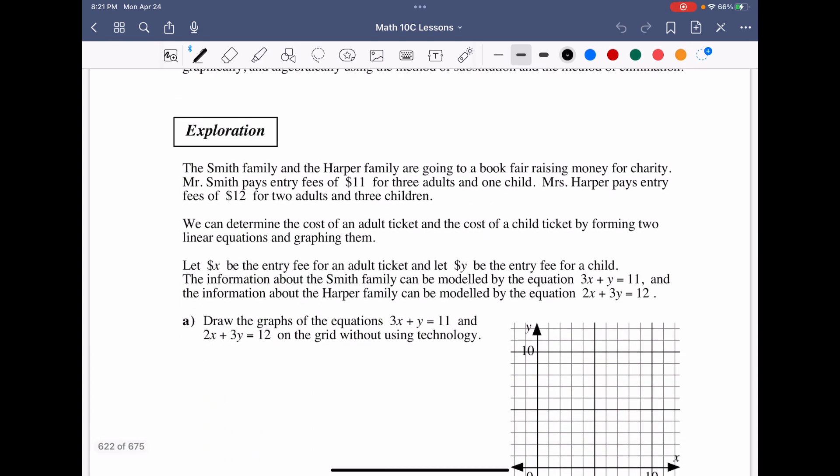In the first example, they say the Smith family and Harper family are going to a book fair raising money for charity. Ms. Smith pays the entrance fee of $11 for 3 adults and 1 child, and Ms. Harper pays the entry fee of $12 for 2 adults and 3 children. So, we see this situation of total cost and how many people are coming along. With this, we have two equations, one that is 3x plus y equals 11, representing the first scenario, or Ms. Smith's entry fees paid, and then we look at the next one for Ms. Harper, and she pays $12, that includes 2x plus 3y.